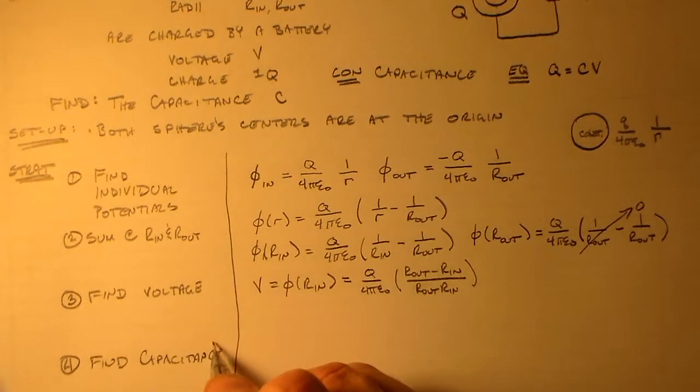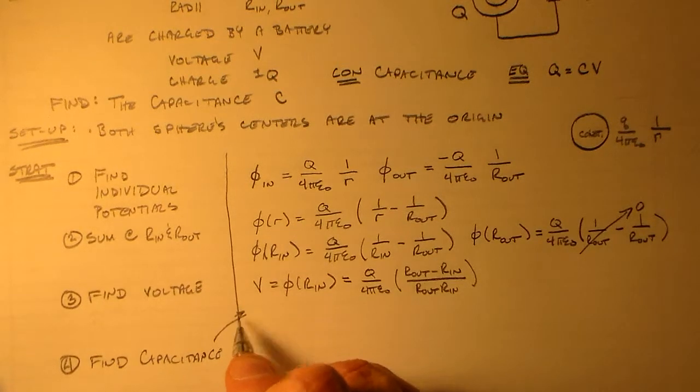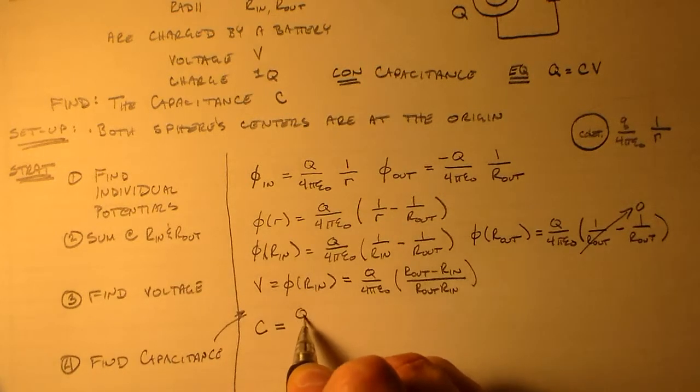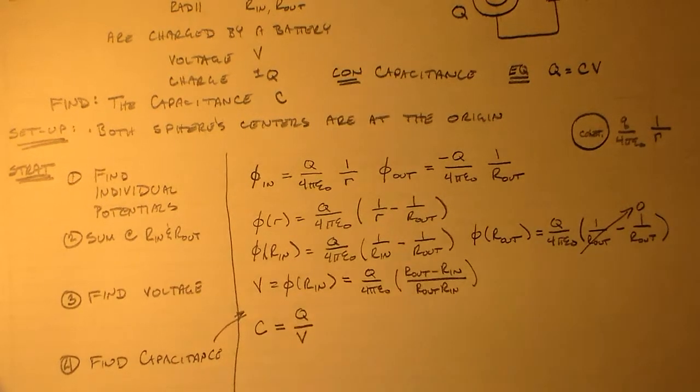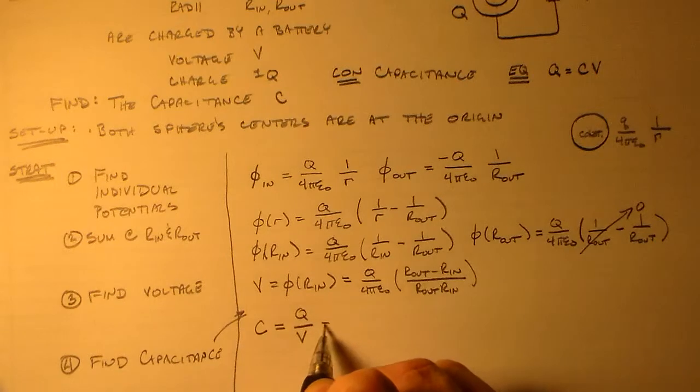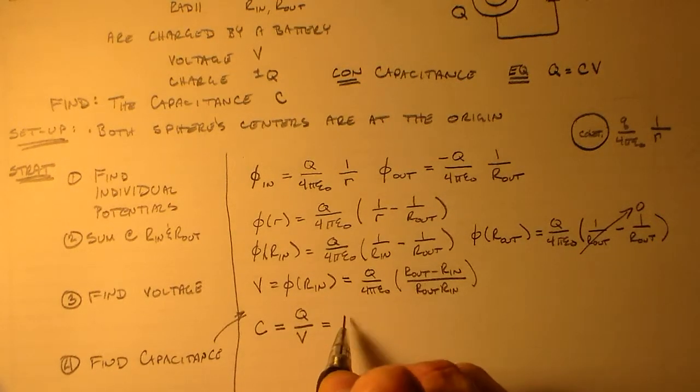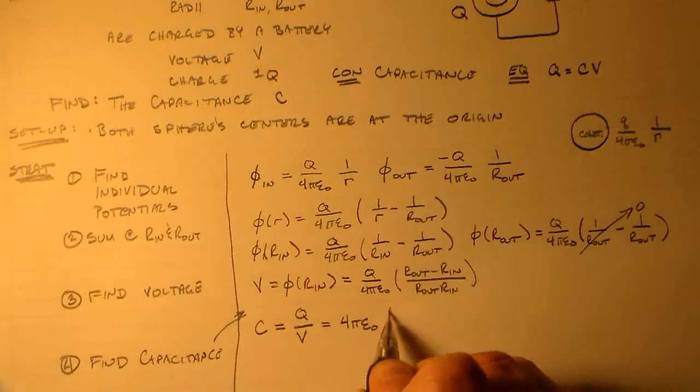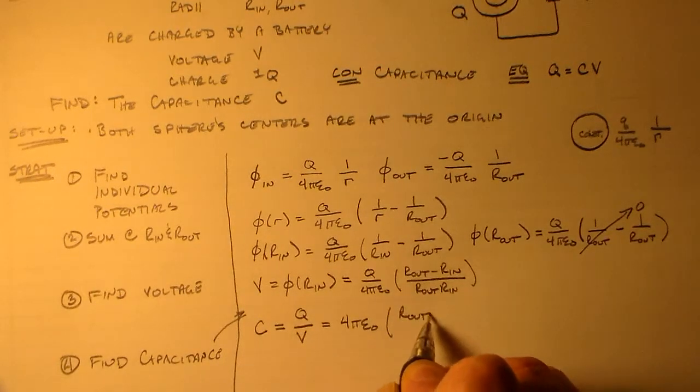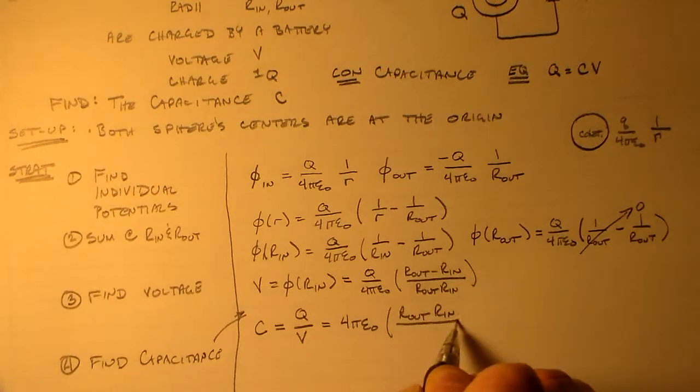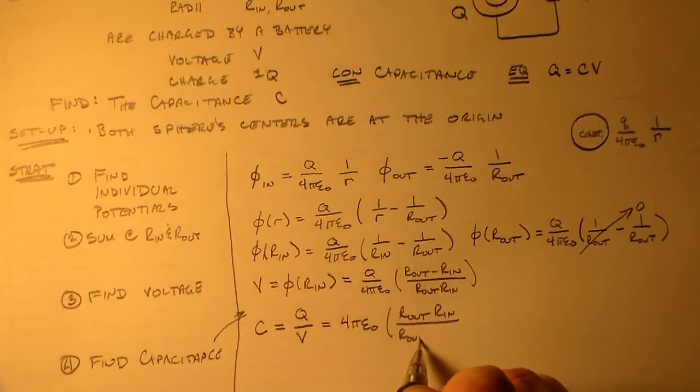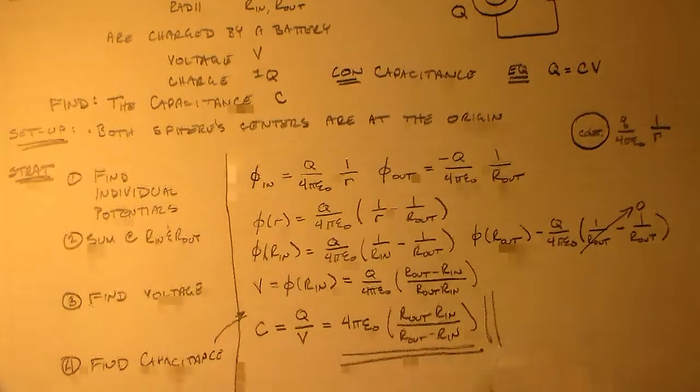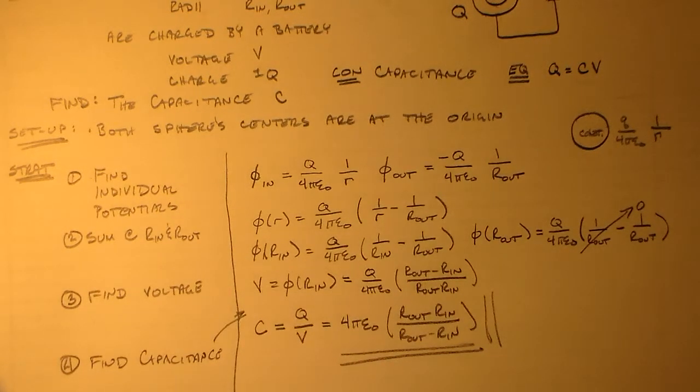We want to find our capacitance. Should have just put it right under there, but I didn't. So the capacitance is equal to the charge over the voltage, which means we have 4 pi epsilon naught times r_out times r_in divided by the difference r_out minus r_in. Bang, bang, bang, bang. Everything's done.